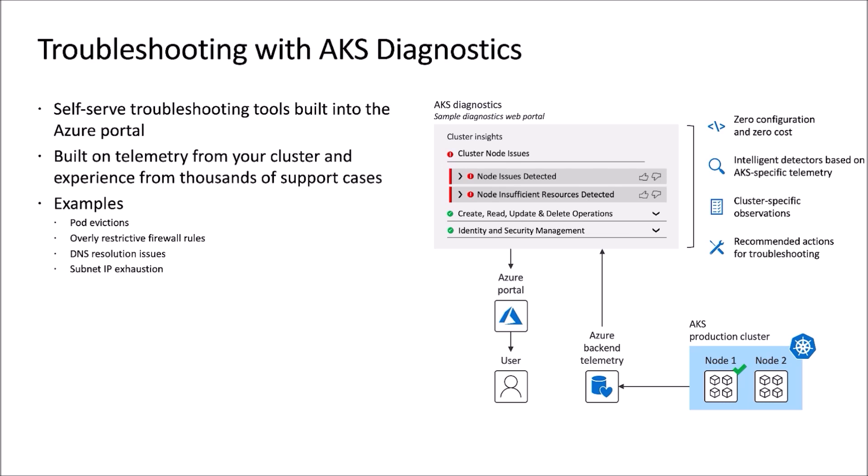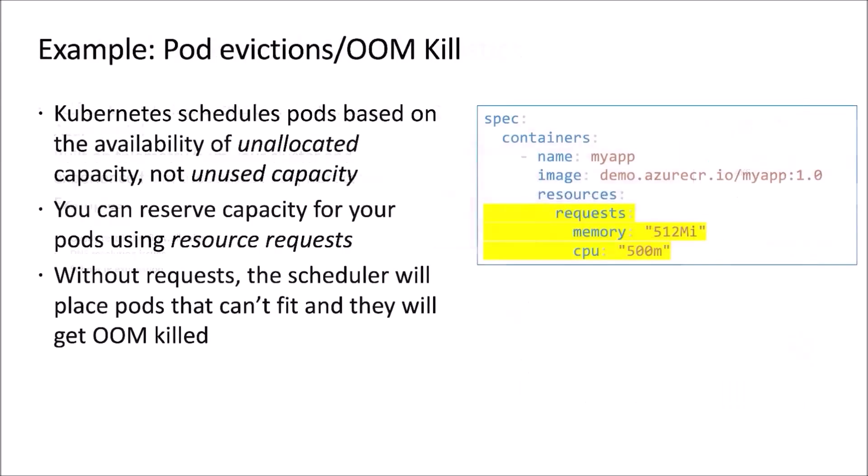A few of the examples you'll see in the diagnostics experience today are around pod evictions, very restrictive firewall rules — a common source of issues in terms of how the cluster operates — issues with DNS resolution, subnet IP exhaustion, and a whole series of additional checks that we perform against the cluster. I want to dig into one specifically because this has been a very common source of issues for customers, and much like pod disruption budgets, is not something that is obvious as you are learning Kubernetes for the first time. That is the pod evictions or OOM-kill troubleshooting step.